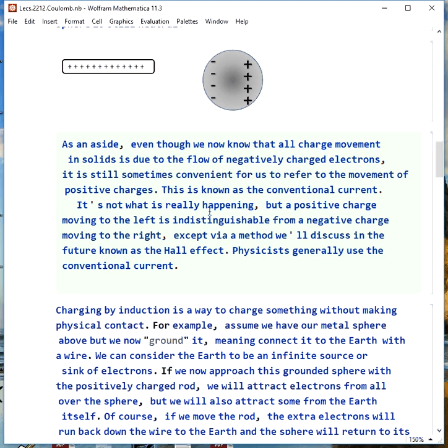Physicists tend to use this conventional current idea where we pretend positive charges are moving, while engineers do the right thing and use negatively charged electrons as the actual current.